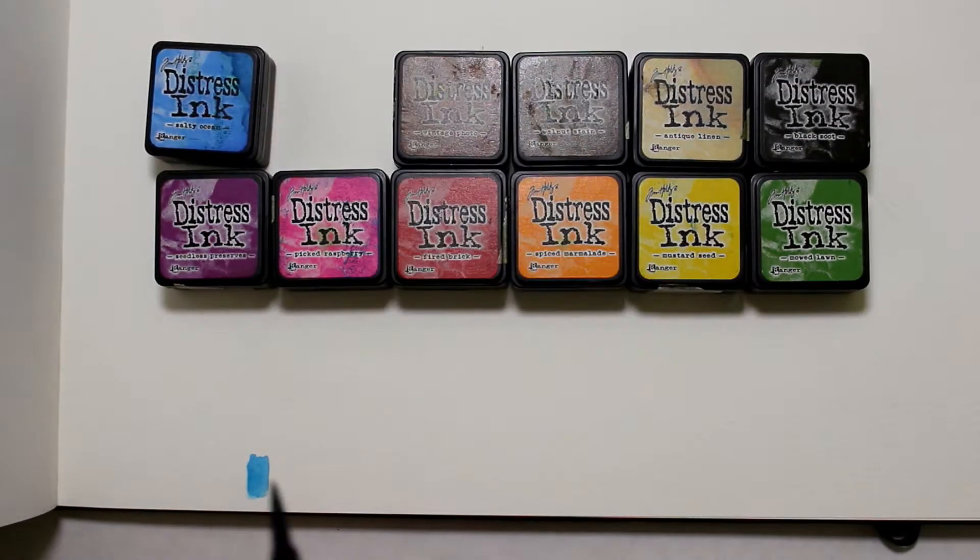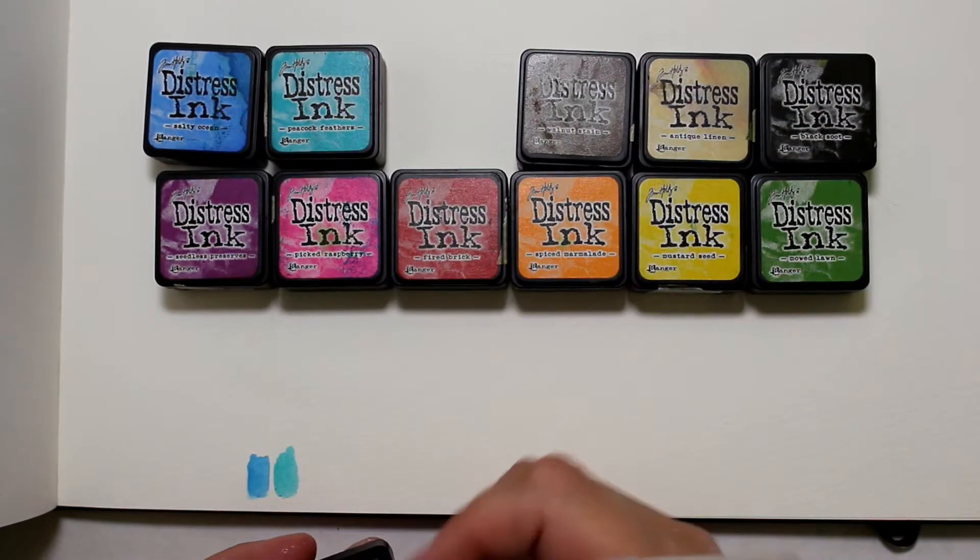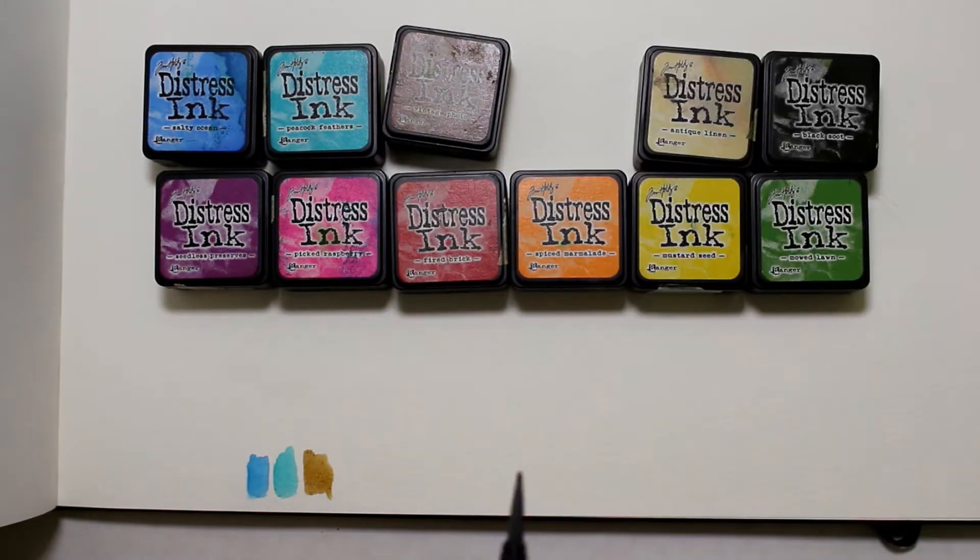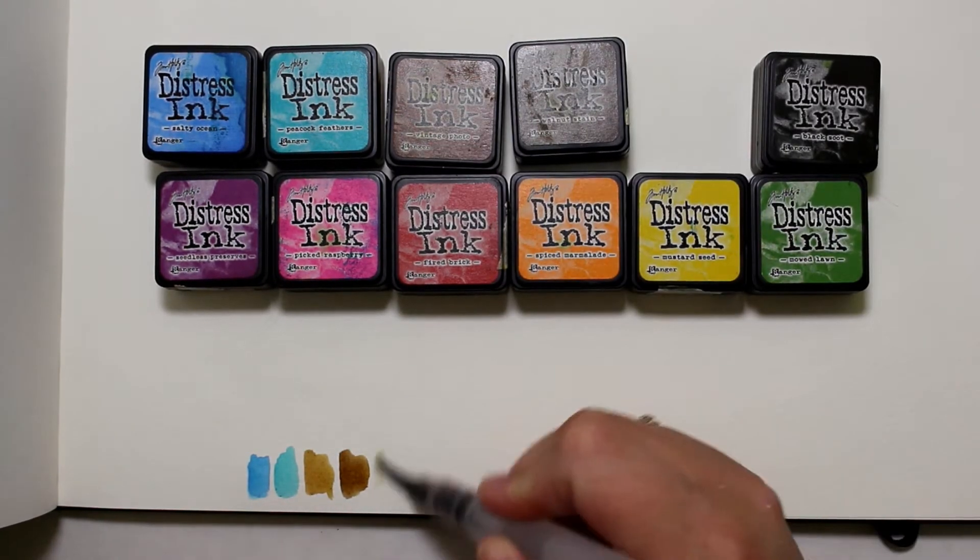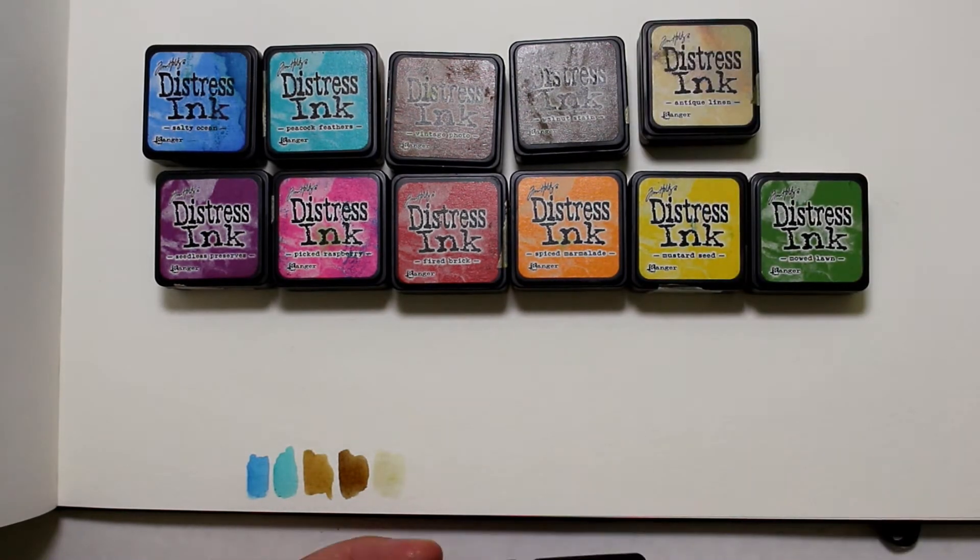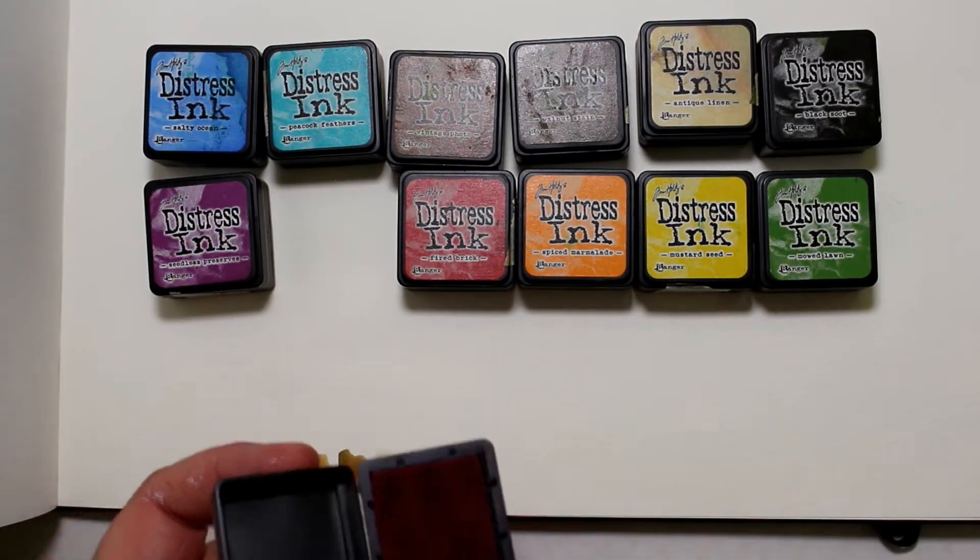So the first thing that I wanted to show you is what the colors look like when you lift them off the stamp pad with the watercolor brush. If you don't have a watercolor brush, you can go ahead and use just a regular paintbrush with some water like you would if you were just doing a regular watercolor painting. And basically just lift the paint off.